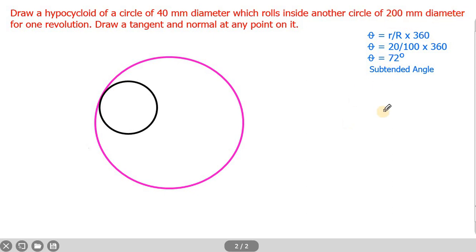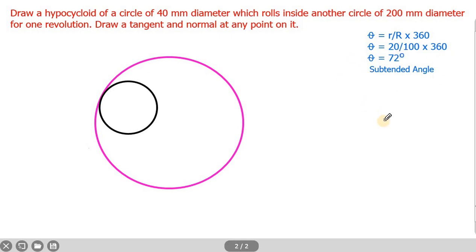Let us start the diagram. As with epicycloid, in hypocycloid also, before starting the diagram, we need to find the subtended angle. The formula is theta equals small r divided by capital R, into 360. Here, small r is the radius of the rolling circle and capital R is the radius of the directing circle. So small r is 20 mm and capital R is 100 mm. 20 divided by 100 into 360 gives 72 degrees — that is the subtended angle.